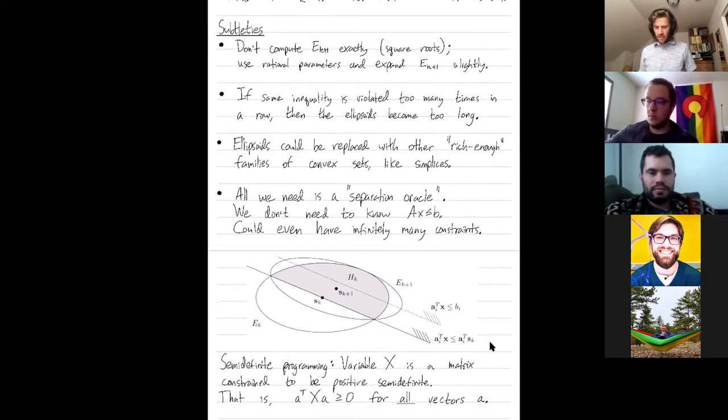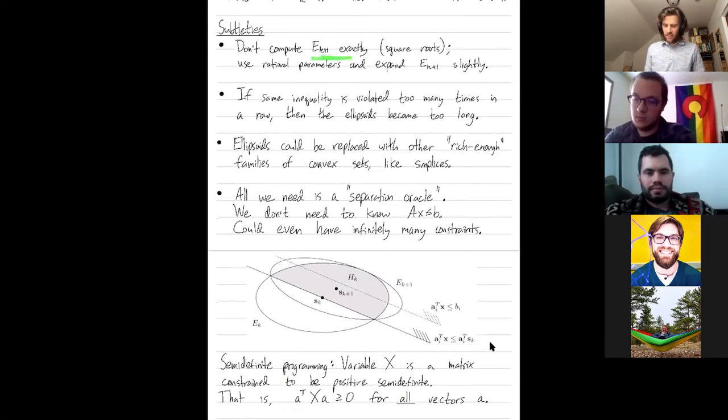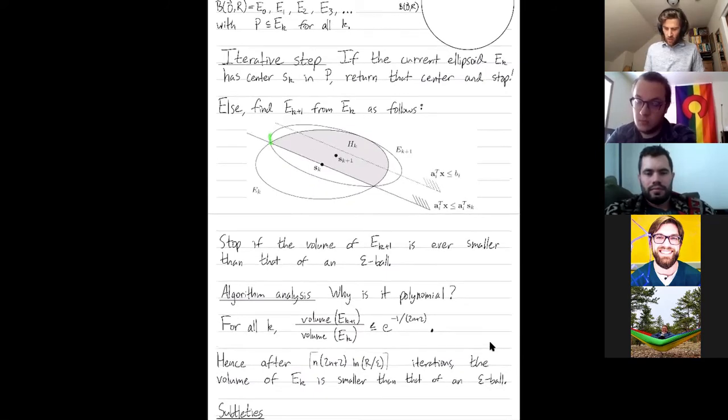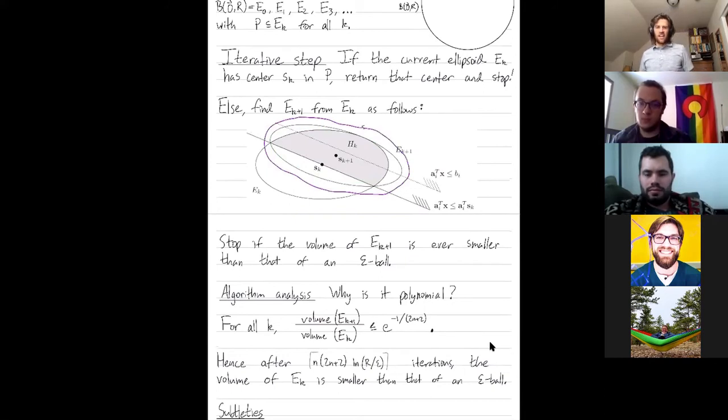So some subtleties and more advanced comments. You actually don't want to compute this next ellipse exactly. You know, you don't want to compute this next ellipse that's tangent exactly. Just because that involves square roots, and then you run into numerical issues. So instead, you're going to find a slightly larger ellipse that has rational parameters.